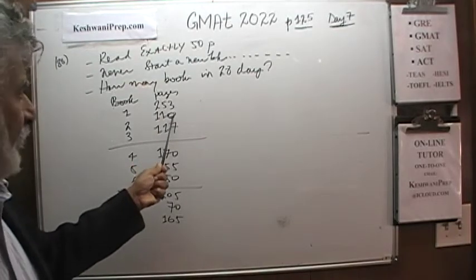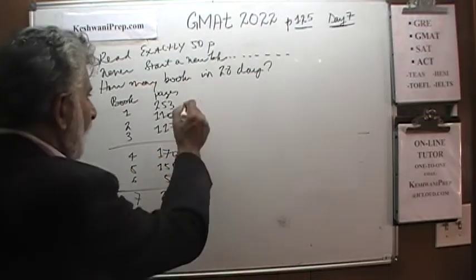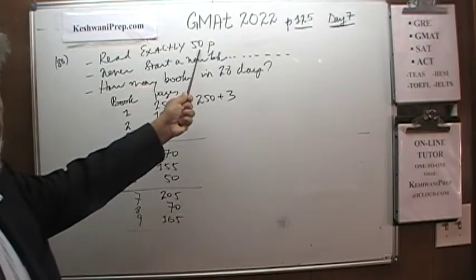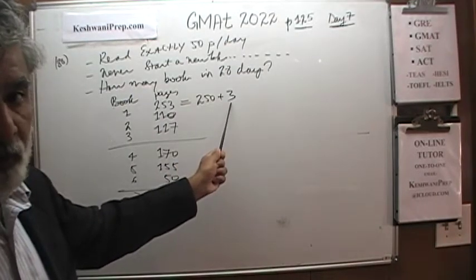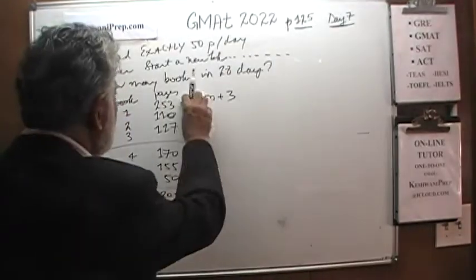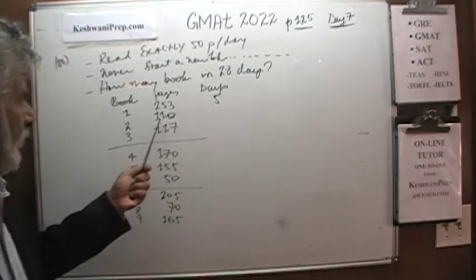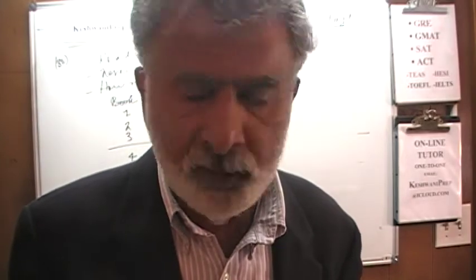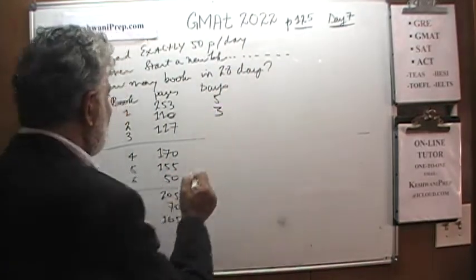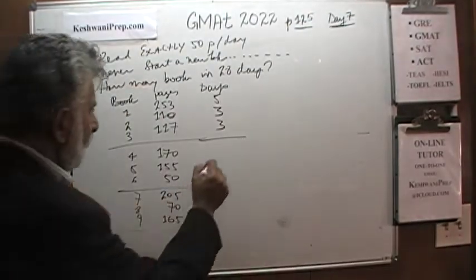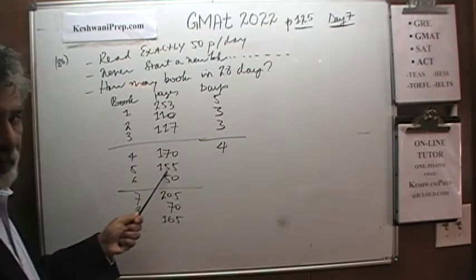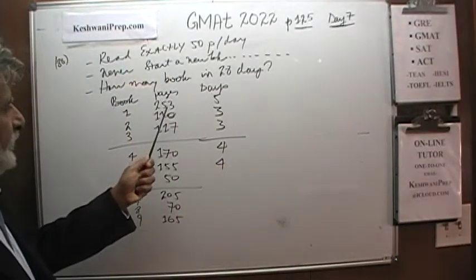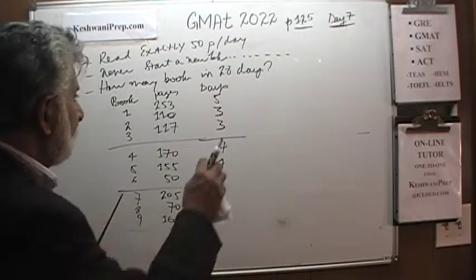How many days to read book 1 with 253 pages? 253 is 250 plus 3. Since we read exactly 50 pages per day, it takes 4 days to finish 250 pages, but we still have 3 more pages which we finish on the 5th day — but wait, we need 6 days, because in 5 days we read 250 pages and need a 6th day for the remaining 3. Book 2 has 110 pages: 50 pages day 1, 50 pages day 2, 10 pages day 3 — that's 3 days. Similarly book 3 takes 3 days.